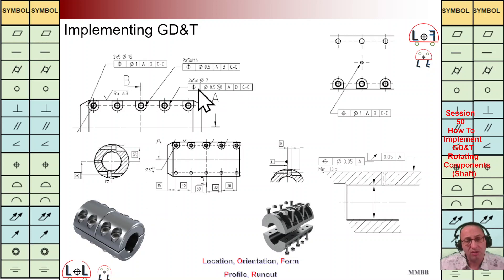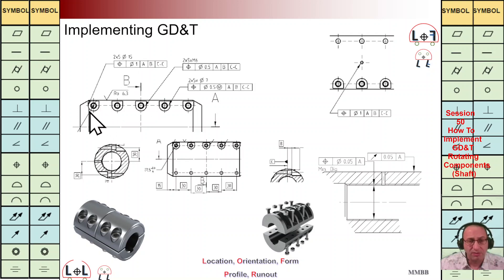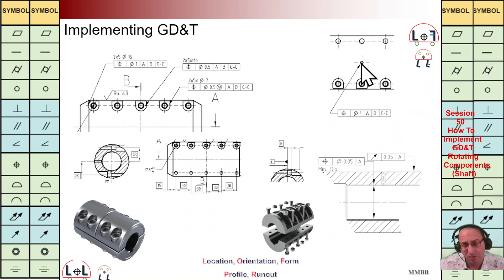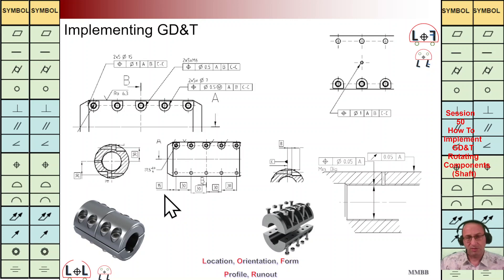Then we have 2×M6 and positioning for those holes. For the threaded hole, we use positioning to control the location, and we control the surface — which is semicircular. We also have another hole in the center of this model and we need to use positioning control for that hole as well. Whenever we use positioning control we need to have basic dimensions, which we have discussed previously.